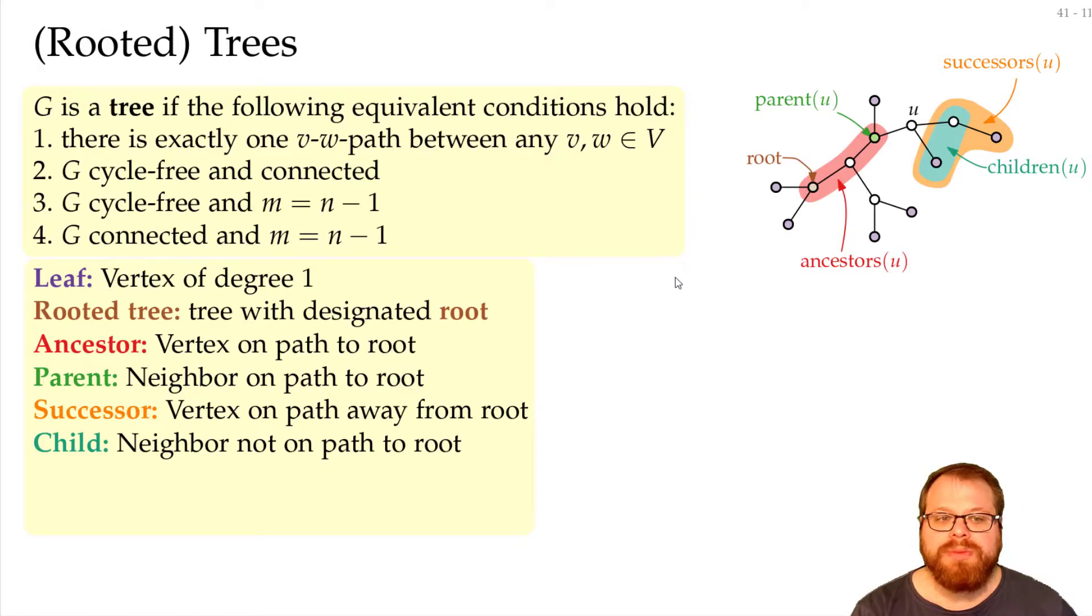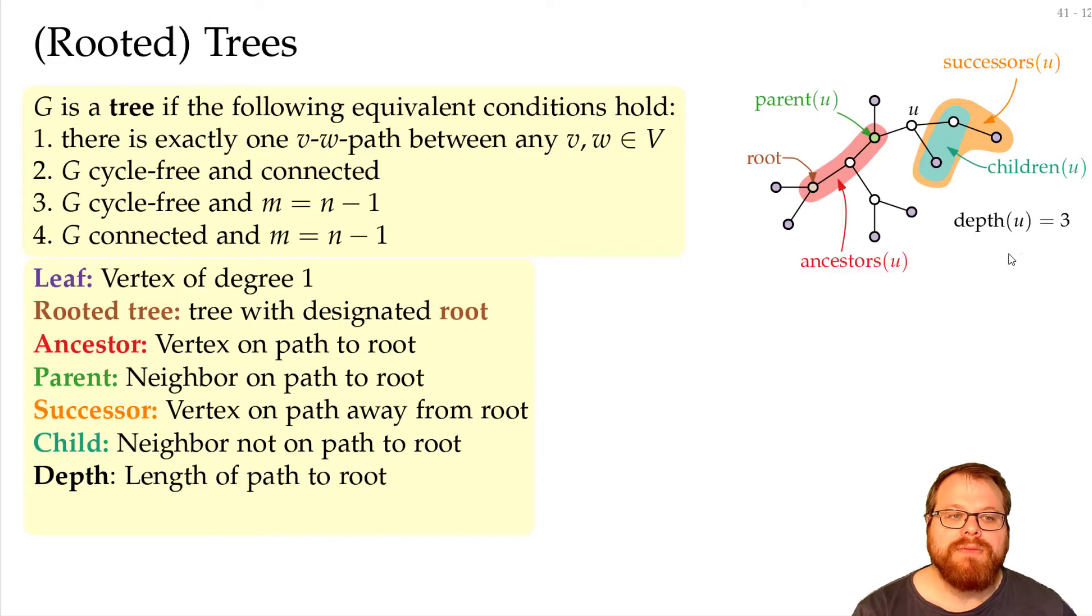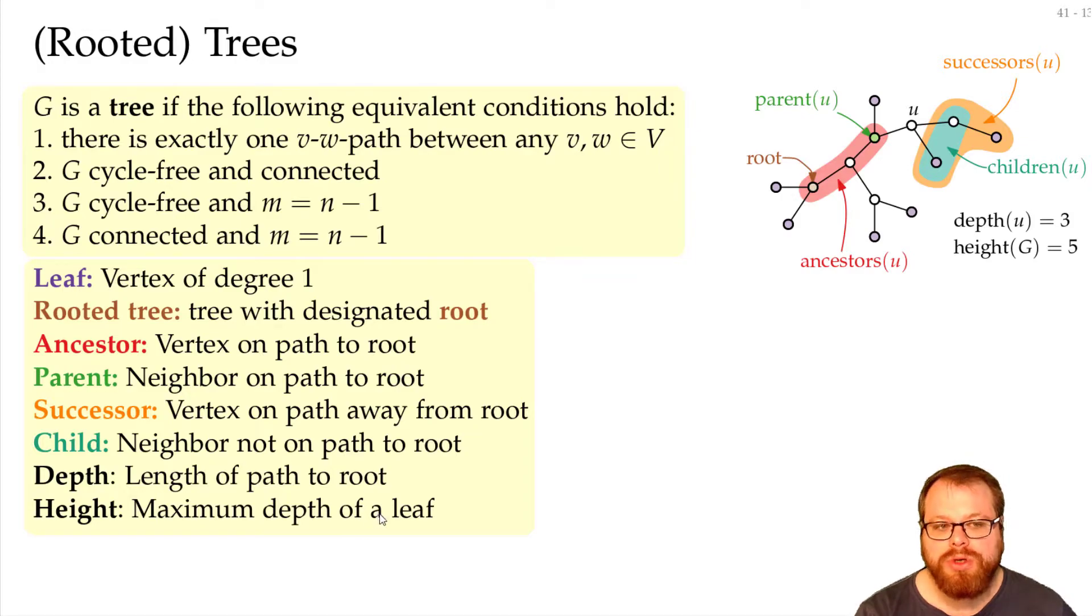Two more important properties are the depth of a vertex. And the depth is the length of the path to the root. The depth of u is three, because there are exactly three edges on the unique path to the root. And the height of a tree is the maximum depth of a vertex or of a leaf. And here it is five, because this vertex here has depth five.